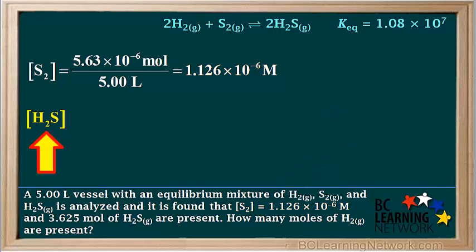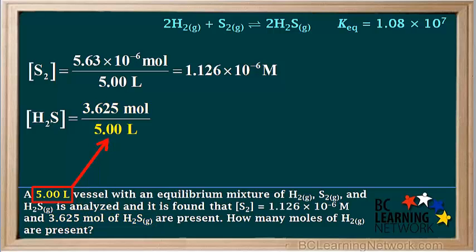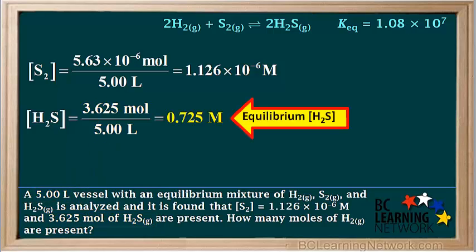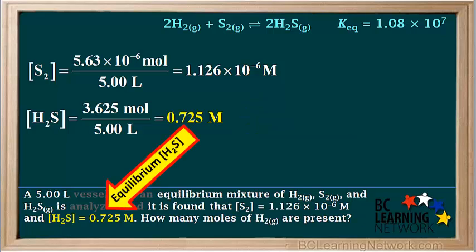Now we'll calculate the molar concentration of H₂S. It is 3.625 moles divided by 5 liters, which comes out to 0.725 molar. This is the equilibrium concentration of H₂S, so we can replace the moles of H₂S with the molarity.